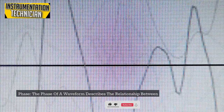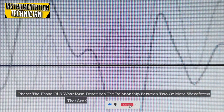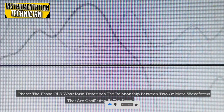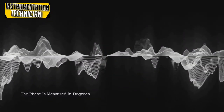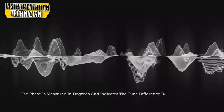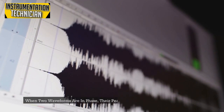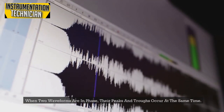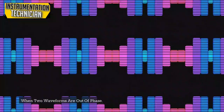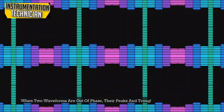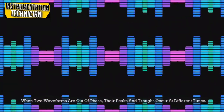The phase of a waveform describes the relationship between two or more waveforms oscillating at the same frequency. Phase is measured in degrees and indicates the time difference between the peaks or troughs of the waveforms. When two waveforms are in phase, their peaks and troughs occur at the same time; when out of phase, they occur at different times.